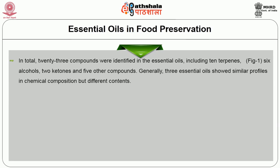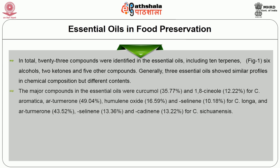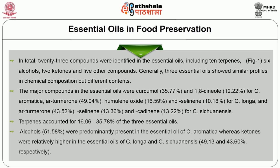In total, 23 compounds were identified in the essential oils including 10 terpenes, 6 alcohols, 2 ketones and 5 other compounds. Generally, 3 essential oils showed similar profiles in chemical composition but different contents. The major compounds in the essential oil were curcumol and cyanol; alcohols were predominantly present in the essential oil of Curcuma aromatica, whereas ketones were relatively higher in other essential oils.